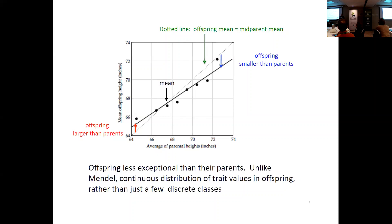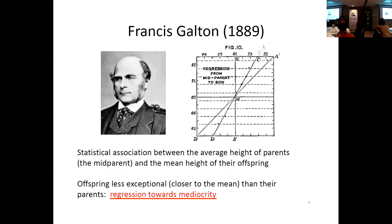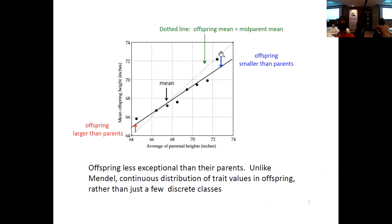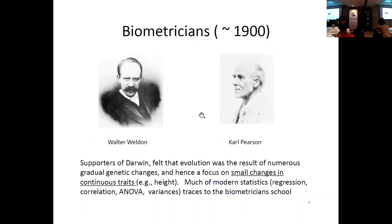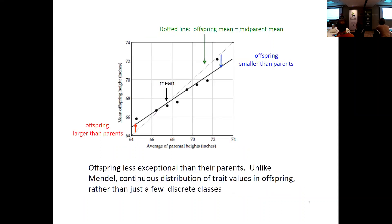The term 'regression' actually comes from this observation — the regression towards mediocrity. Exceptional parents had offspring that were less exceptional. In true Victorian fashion, Galton looked at this and said England is doomed, because the smart aristocrats had kids who were dumber than them. What he neglected was that the dumb aristocrats had kids who were smarter than them — so the net result is no change. This notion of statistical relationships was really motivated by Darwin, because small effects have long-term evolutionary consequences.